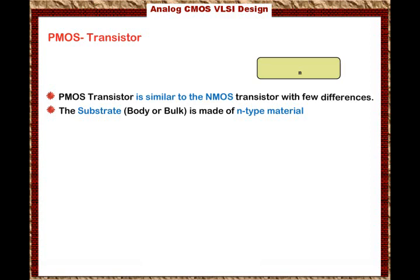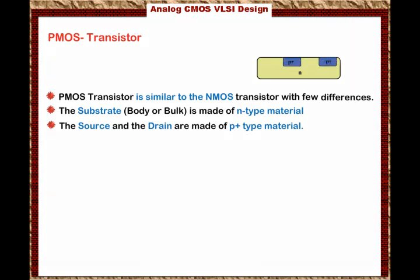We have the source and the drain, and the source and the drain are made of heavily doped P-type material. For the gate, we are going to have silicon dioxide and the poly layers to constitute the gate.